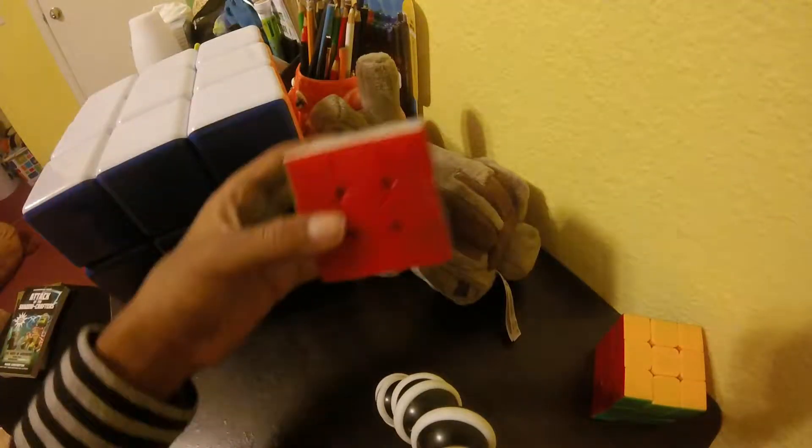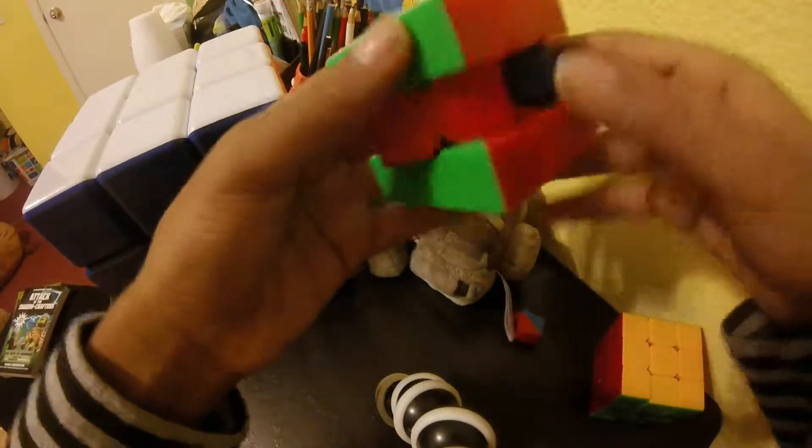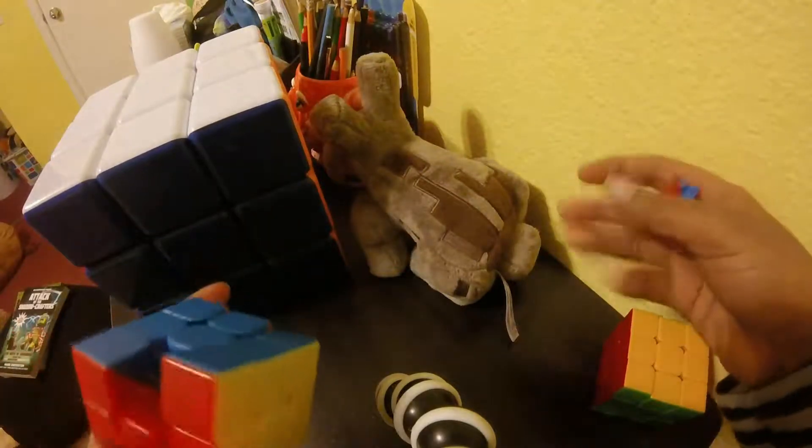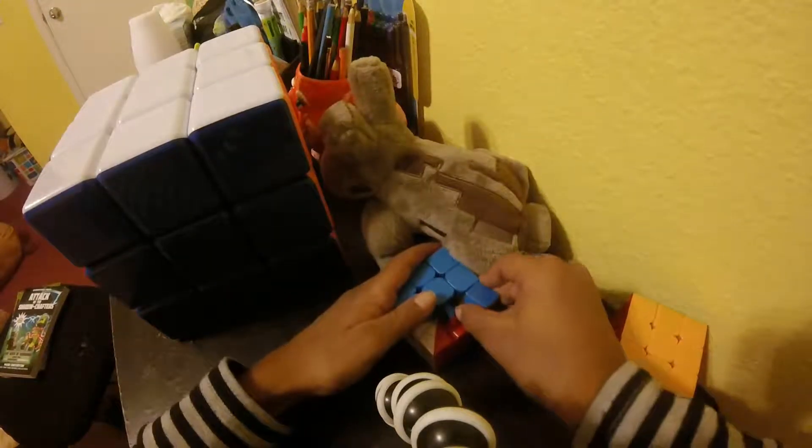The next method I will be showing you to disassemble is the edge method. What you do is you slice an edge like this, twist it. That will usually pop it out on other cubes that have layers like this. And then put the corners out.